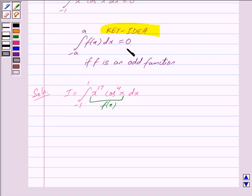So by key idea we can straight away say that this is equal to 0 because here we have limit from minus a to a and f is an odd function. So we get I is equal to 0.